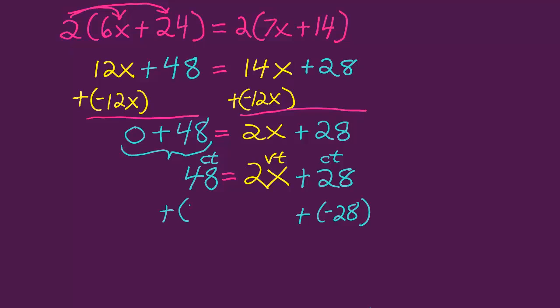So to do that, I'll add the opposite of 28 to both sides of the equation. On the left, that gives me 20. And on the right, I'll have 2x plus 0.